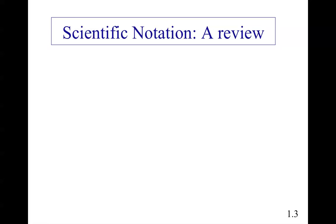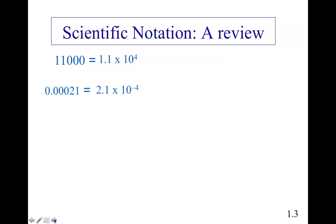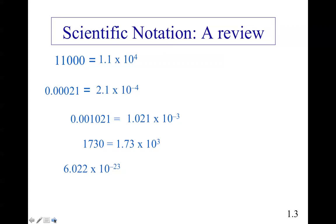Now, a review of scientific notation as needed in the study of chemistry and the environment. 11,000 can be expressed as 1.1 × 10⁴. 0.00021 can be expressed as 2.1 × 10⁻⁴. 0.001021 can be expressed as 1.021 × 10⁻³. 1,730 can be expressed as 1.73 × 10³. 6.022 × 10⁻²³ — now you can see all those zeros and understand why we use scientific notation, because we're sometimes dealing with very small and very large numbers.